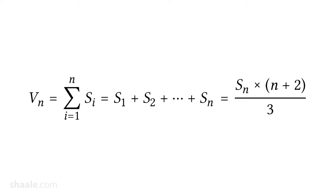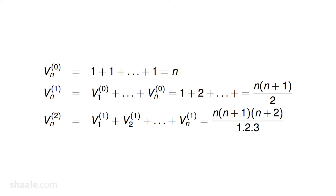Then he says 'saadhviyutena padena vinighini': take the quantity n plus 1 into n by 2. Dviyutena padena means 2 added to n. Dviyutena padena vinighini — multiplied by n plus 2. Syatthrihirtha — trihirtha means divided by 3 — sankalitaikya. So you get the sum of sums as n into n plus 1 into n plus 2, divided by 1 into 2 into 3. This will be the second order sankalita.